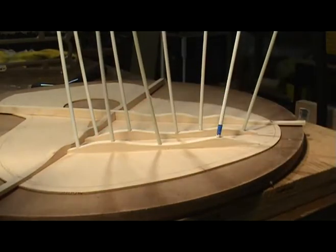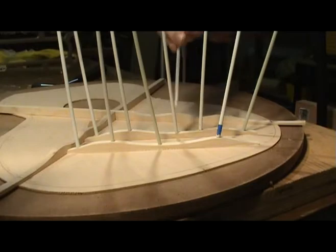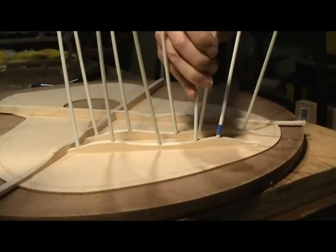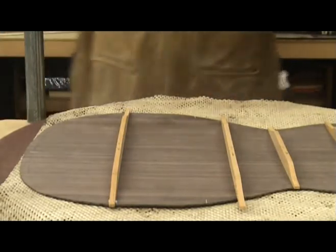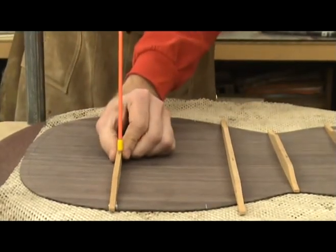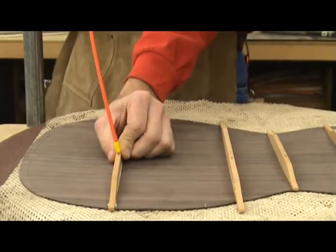Some of the benefits of using the go bar method for clamping include: It's inexpensive. You don't have to invest in a lot of clamps. The rods can be placed close together and in hard to reach places, and they can be positioned and removed quickly and easily.